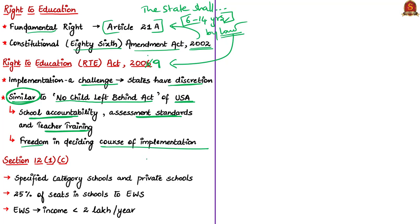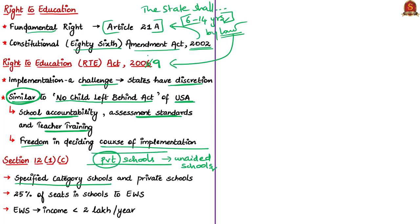The authors then come to the main section dealing with private schools — specifically unaided schools that do not receive any aid or grants from the appropriate government, and specified category schools. The article relies on Section 12, Subsection 1, Clause C of the Right to Education Act, which deals with these two types of schools. This provision mandates that private schools and specified category schools must allocate 25% of their seats to children from weaker sections and disadvantaged groups in the neighborhood.